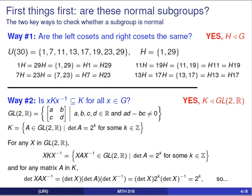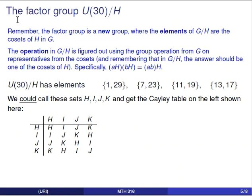With this in mind, we are in a position to form factor groups. The factor group can be formed whenever you have a normal subgroup H — the elements of the factor group are the cosets of H in the original group G. In the group U(30) mod H, the elements are the four cosets: {1,29}, {7,23}, {11,19}, and {13,17}. These four objects are the elements of our factor group.